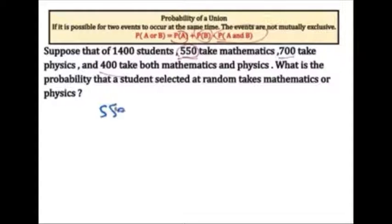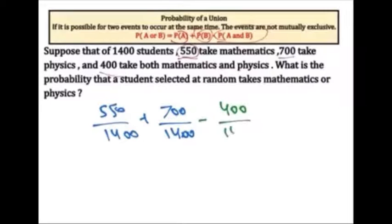550 over 1400 takes mathematics, plus the probability that they take physics, which is 700 over 1400. So now I need to go ahead and subtract where both happens. How many take mathematics and physics? Well, 400 take both, subtract 400 over the total, which is 1400. Takes both, so minus 400 over the total 1400. So we go ahead and add them together.